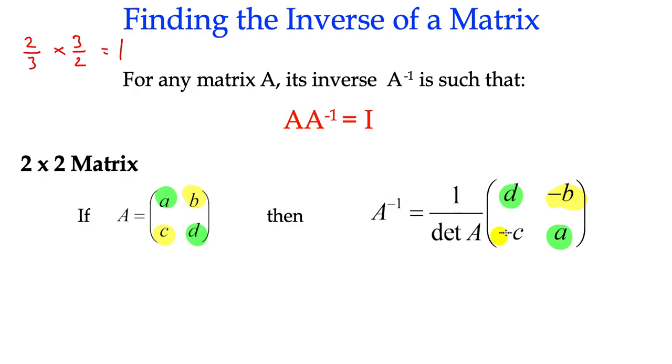Do you notice that their places aren't swapped, but they're multiplied by negative 1. So if it was a negative value in the first matrix, then it would be positive or vice versa. You multiply the value by negative 1. Then we can multiply that fraction in, or we can leave it as it is, but that would give us our inverse matrix.